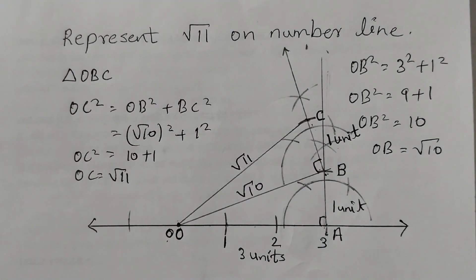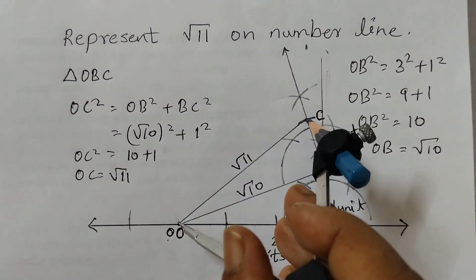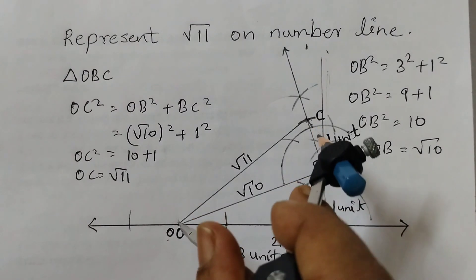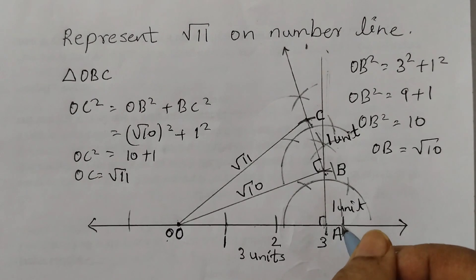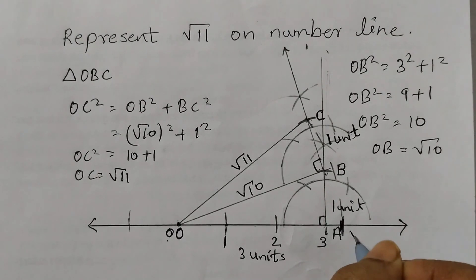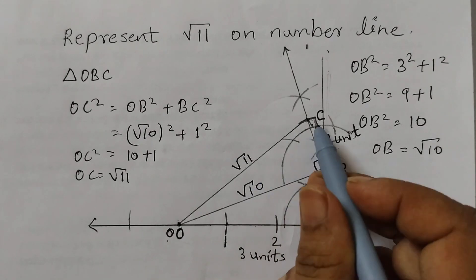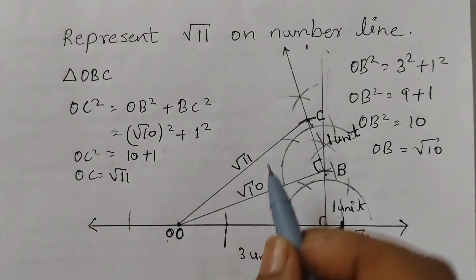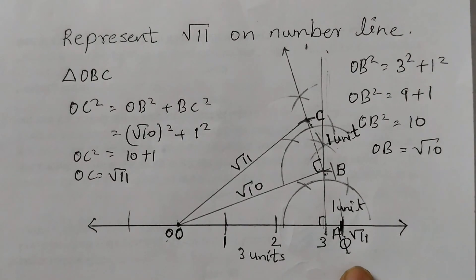Now take your compass and measure the distance from O to C. Taking OC as the radius, cut an arc on the number line. This point represents √11 — let's call it point Q. Q corresponds to √11 because OC is the radius and OC = √11, so OQ = √11. This is how you represent square root of 11 on the number line. Hope you find this video helpful, thank you.